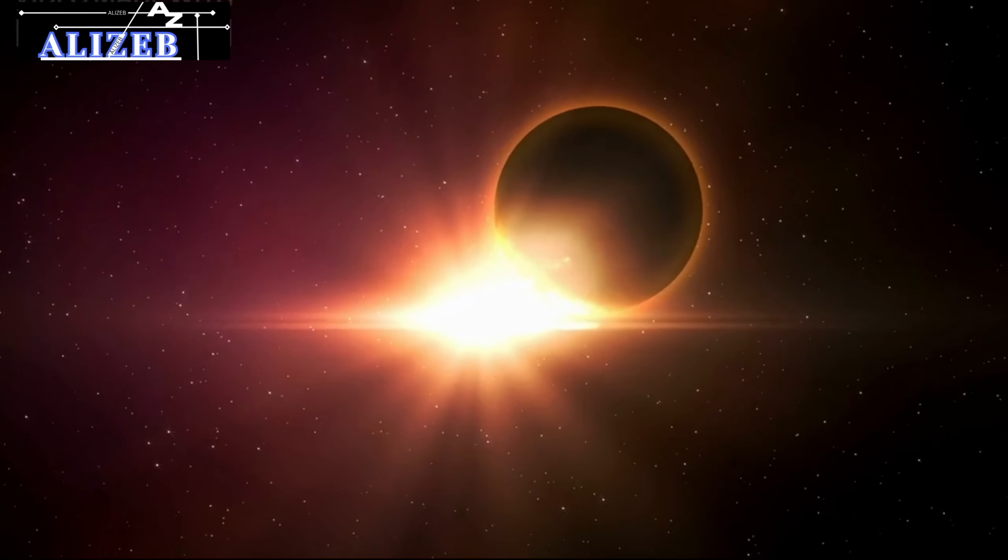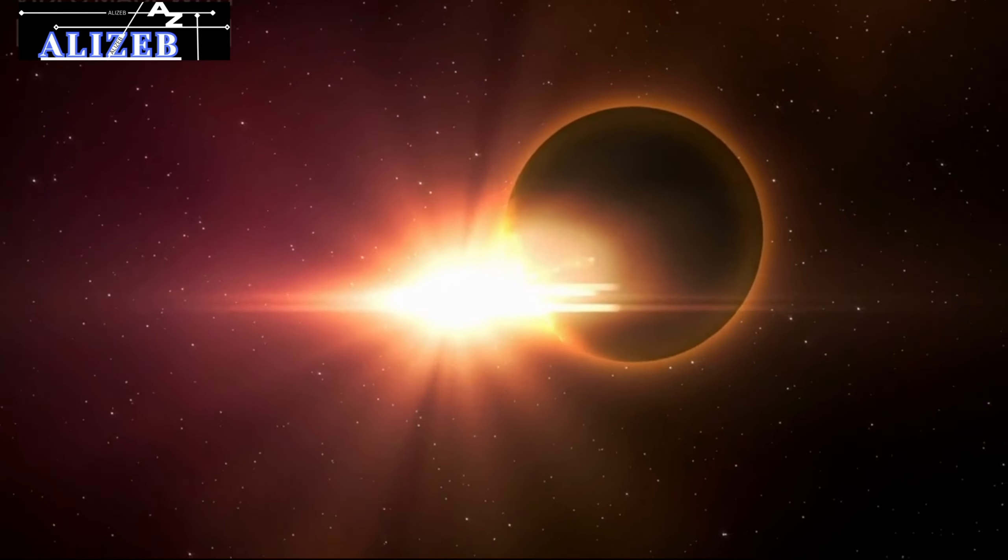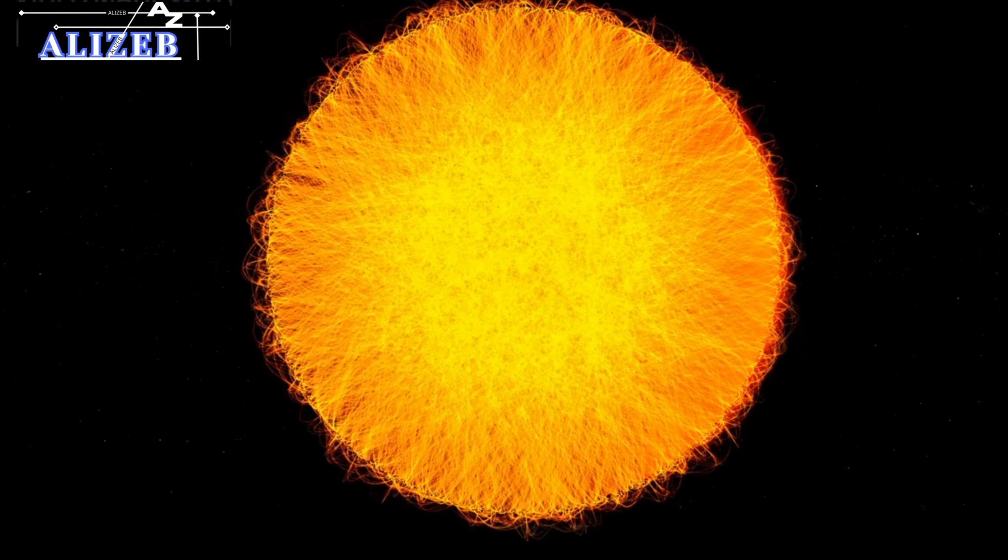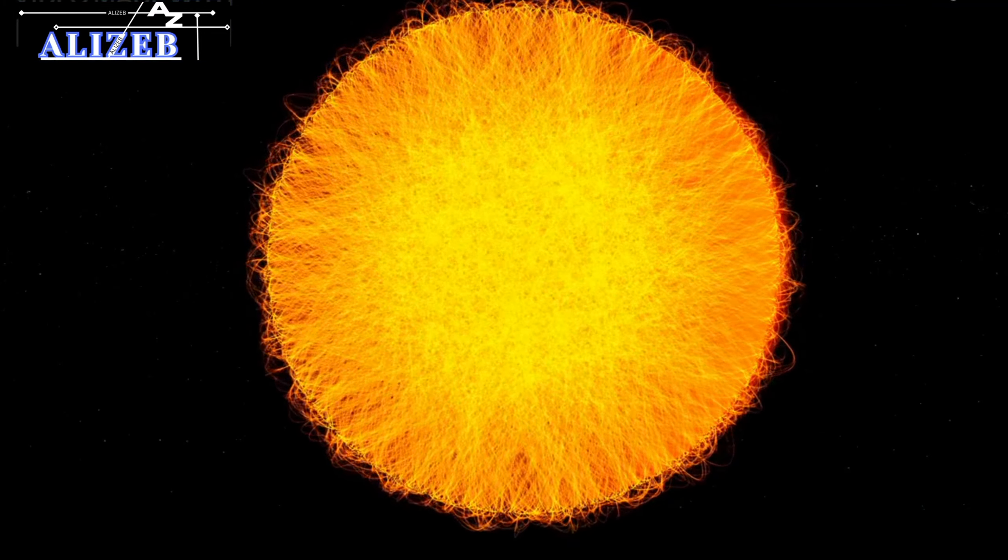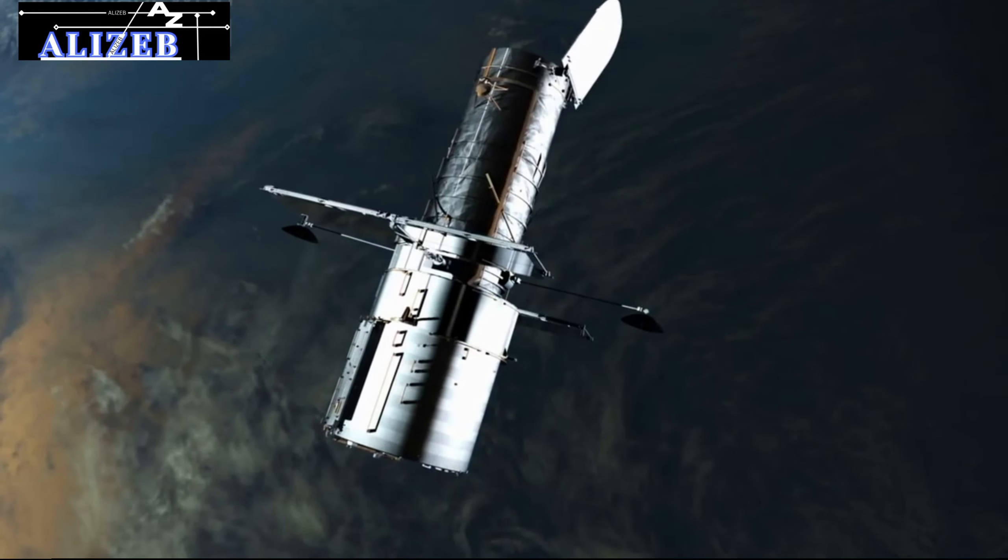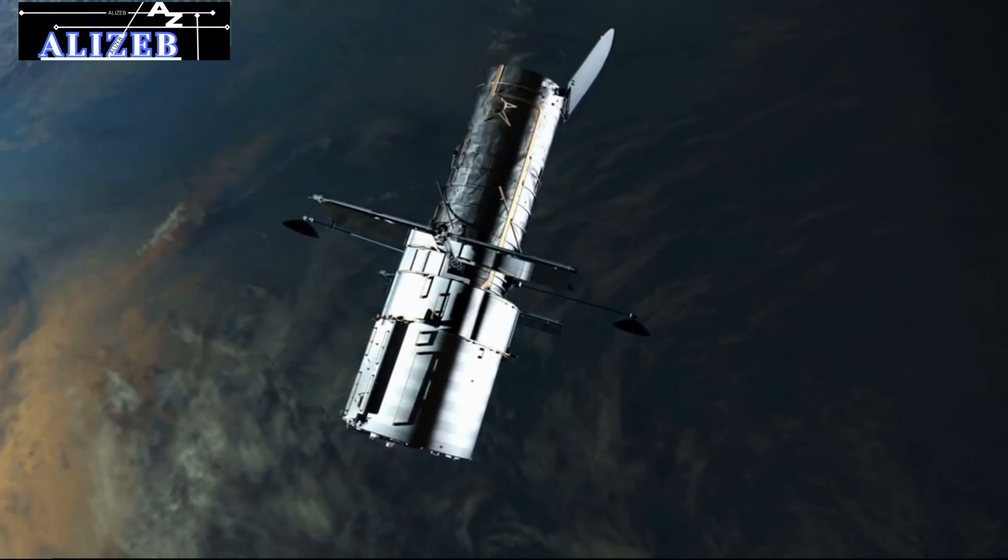Proxima Centauri is our sun's closest neighbor, situated 4.2 light years away. Although much smaller and not visible to the naked eye, this flare star was first observed in 1915. Flare stars like Proxima Centauri release intense solar flares similar to our sun's activity. It can only be observed using telescopes due to its dimness.